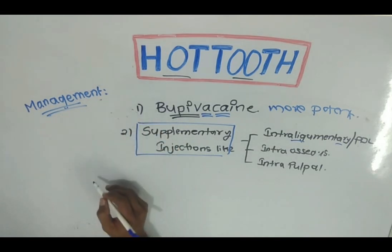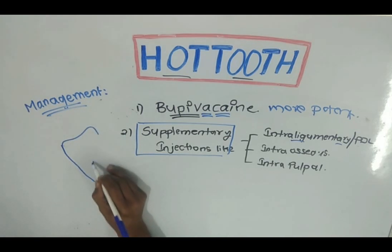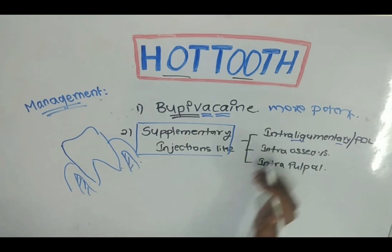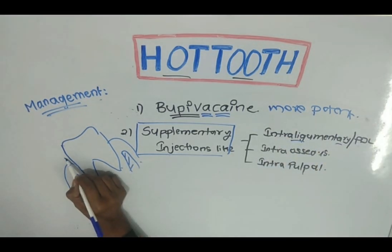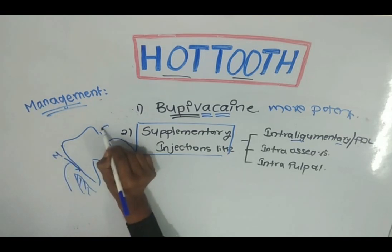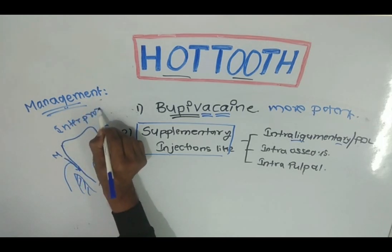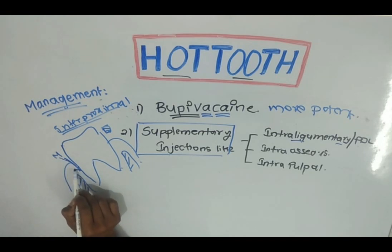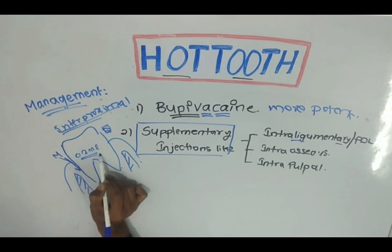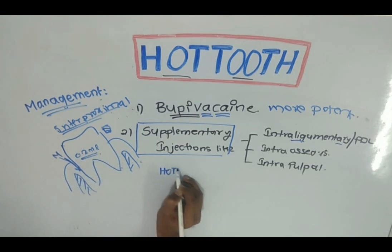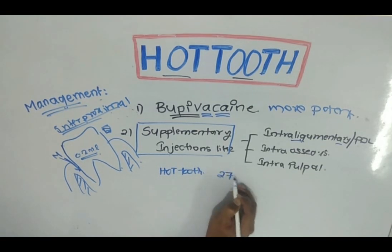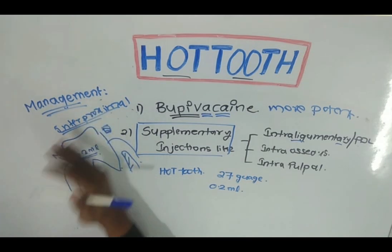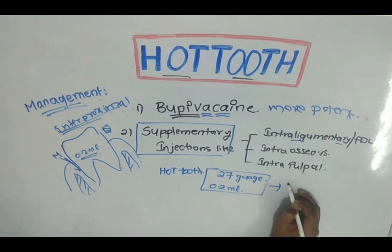For the intraligamentary or PDL injection, suppose you have a molar — you inject the anesthetic solution on the mesial and distal sides, that means in the interproximal surfaces. You inject an anesthetic solution of 0.2 ml on both mesial and distal interproximal spaces using a 27-gauge needle. It is the most effective technique in the case of hot tooth, and the anesthesia will last for approximately 27 minutes.